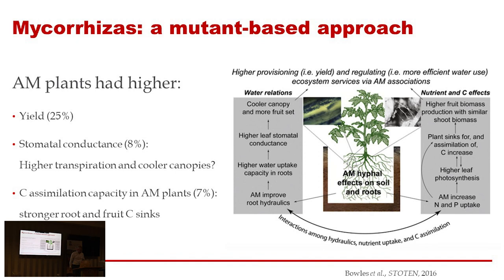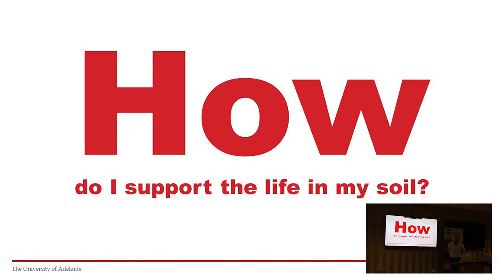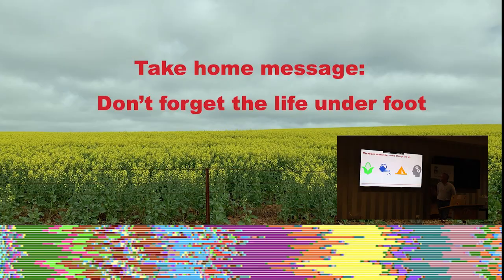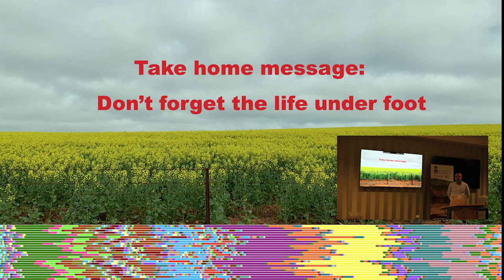When I talk to farmers, the question I get is: how do I support the life in my soil? Microbes want the same things we do — food, as we heard about with carbon; water, which is useful if you're trying to stay alive; shelter; and someone to think about how they're managing the soil. The take-home message I always give is: don't forget about the life underfoot. When you're making a management decision about what's going on above ground, also think about what the impacts might be below ground, because those two things are really intimately connected.